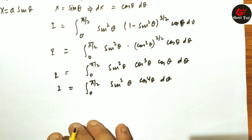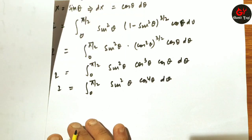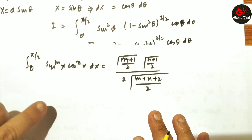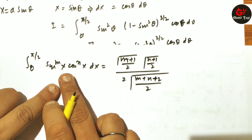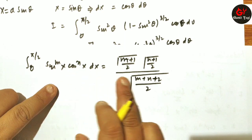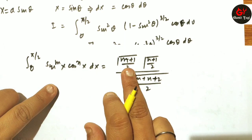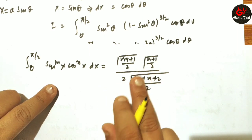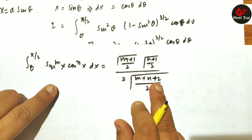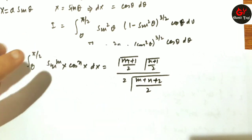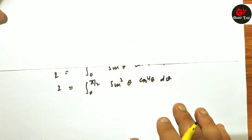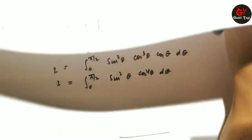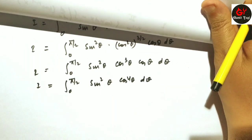I will apply the standard formula for integrals of the type ∫₀^(π/2) sinᵐθ · cosⁿθ dθ = [Γ((m+1)/2) · Γ((n+1)/2)] / [2 · Γ((m+n+2)/2)]. This is a direct result; we will also do the proof of this later.